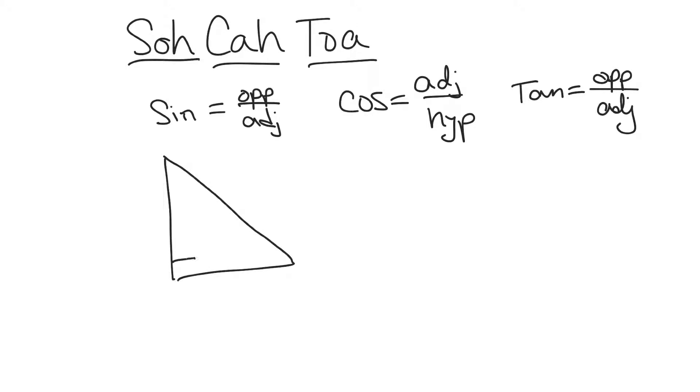This is all in reference to a right triangle. If I'm looking at angle A, first of all the hypotenuse is always opposite the right angle. The opposite side in relation to angle A would be here, therefore the adjacent leg is one of the legs that forms the actual angle.